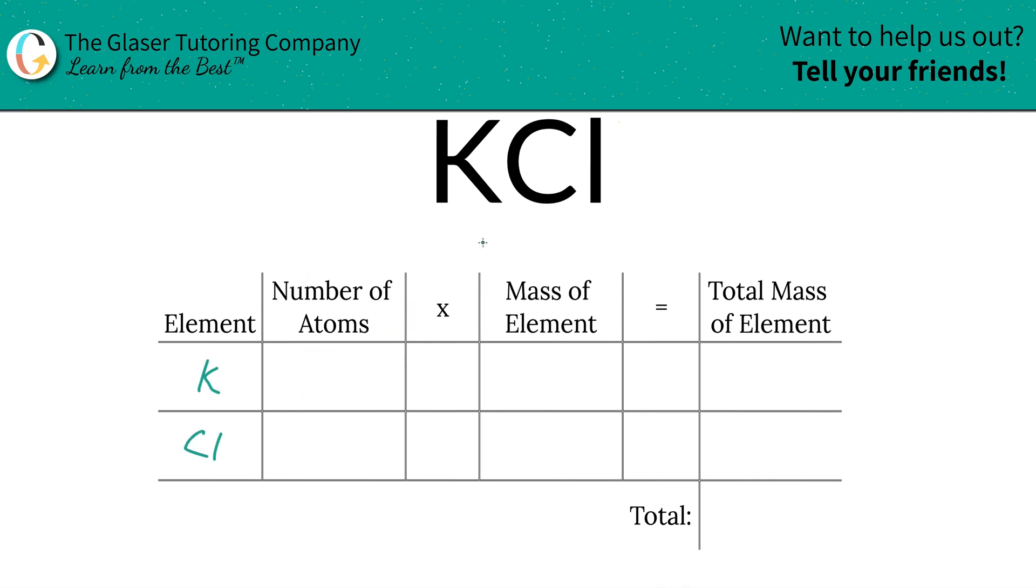Next is to identify the number of atoms, and that's where the subscripts come into play. Now if you don't see a subscript at the bottom of that element, there is an assumed one down there. So there's one potassium and also one chlorine.